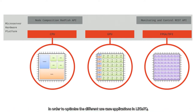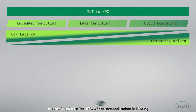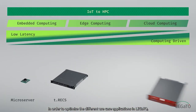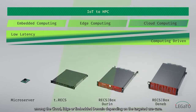In order to optimize the different use case applications in Legato, different domains from IoT to HPC need to be covered. Using a microserver-based approach, we can configure the optimal hardware among the cloud, edge, or embedded domain, depending on the targeted use case.